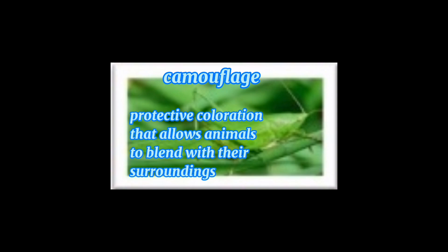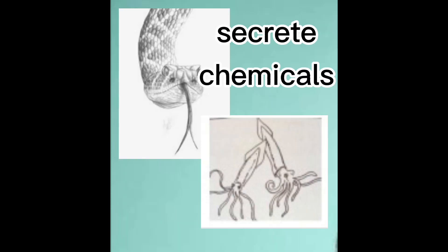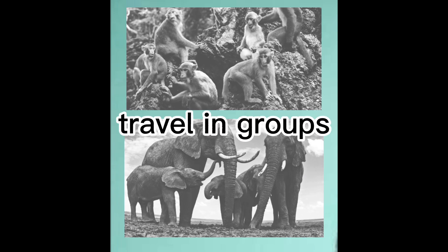Animals use protective coloration that allows them to blend with their surroundings. Most insects secrete chemicals that they use to protect themselves, like squid and snakes. Other animals protect their own kind and travel in groups like monkeys and elephants. They scatter to look for food but stay within hearing distance. When there is danger, they group together to protect each other.